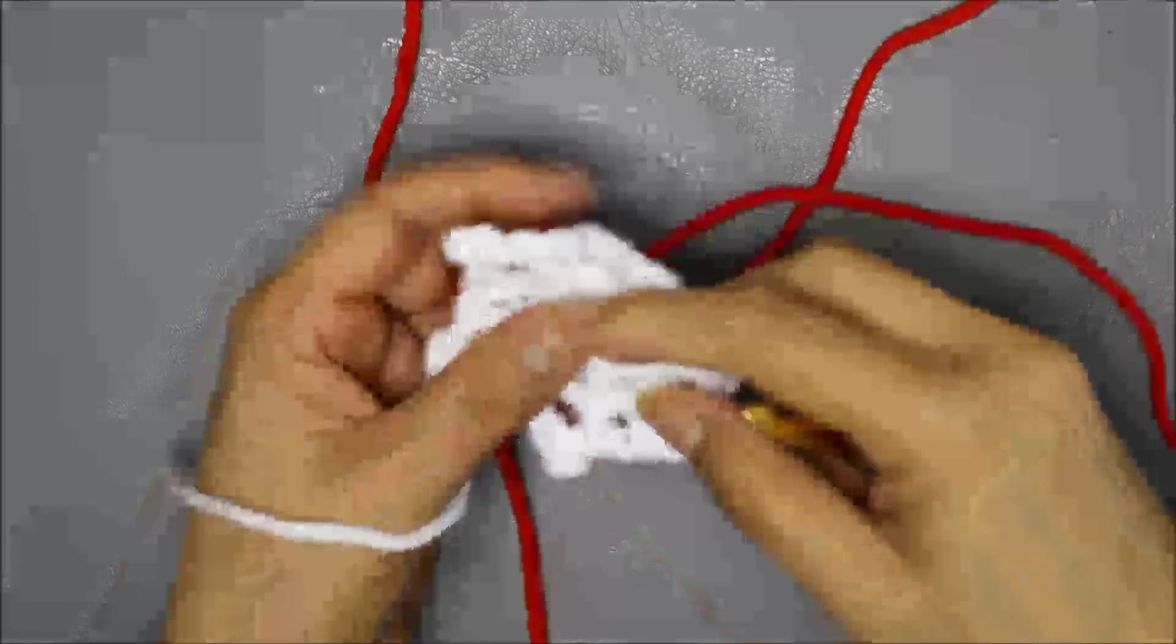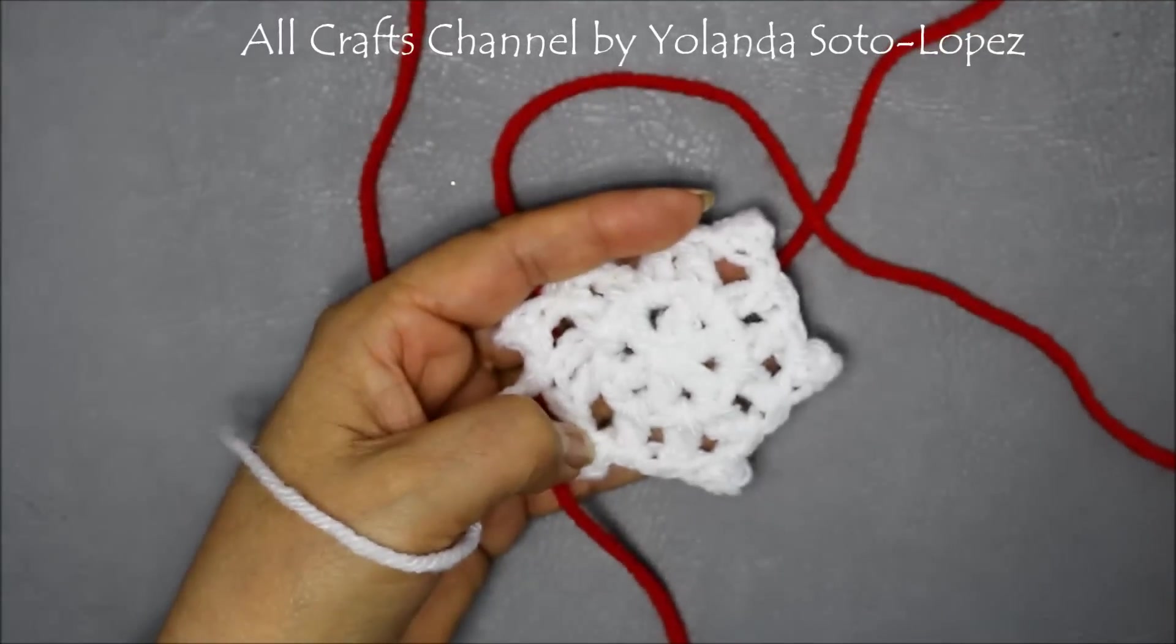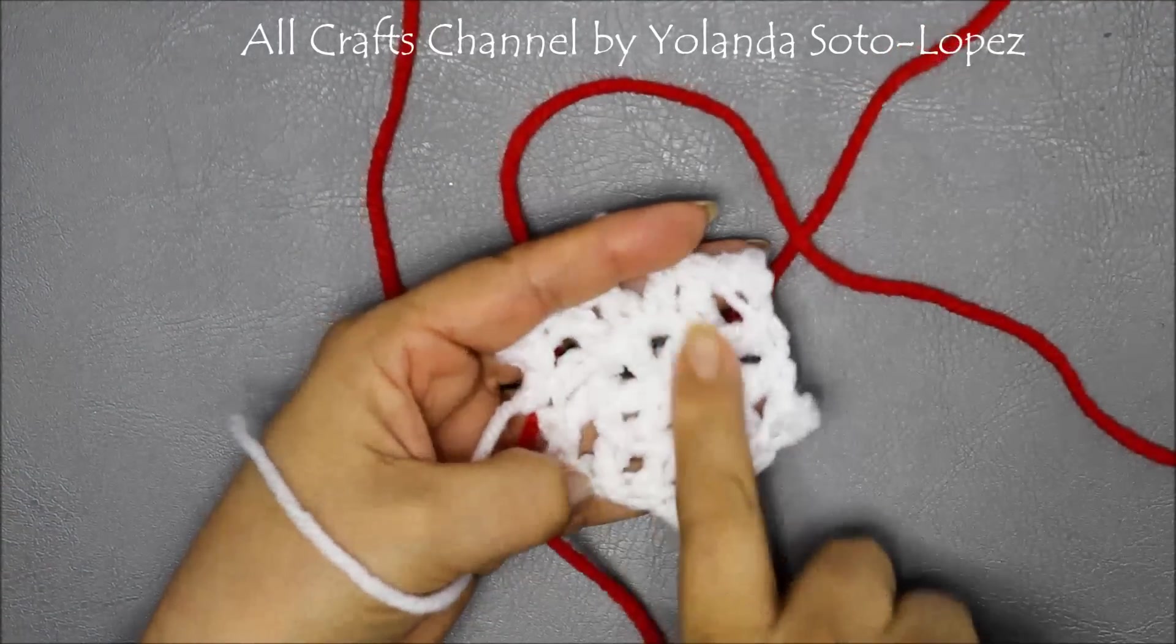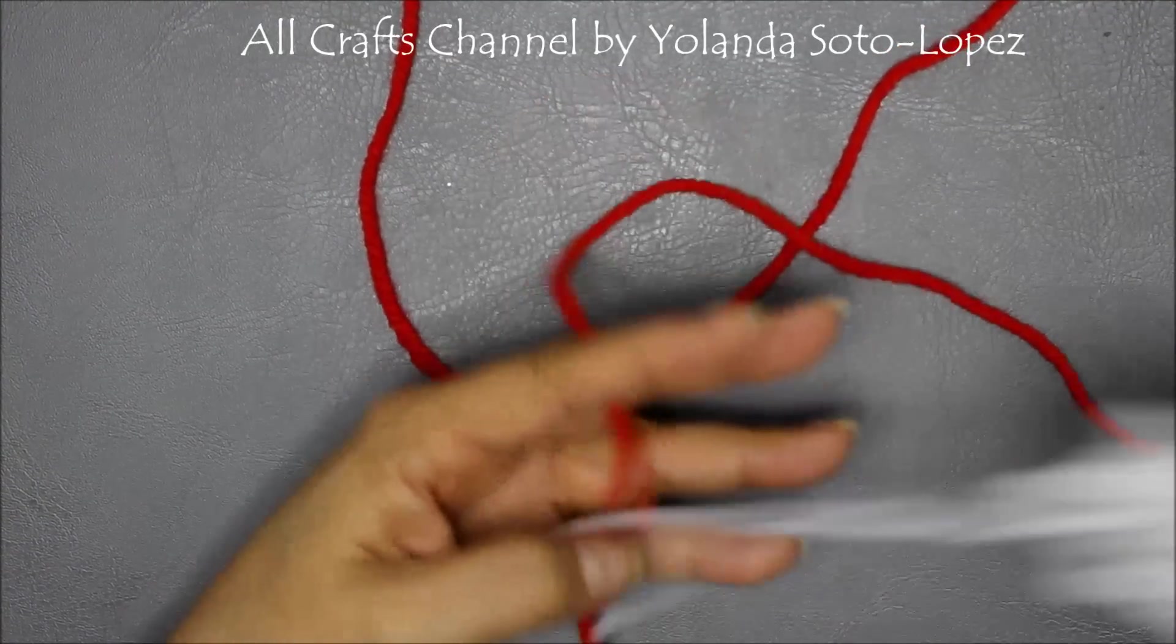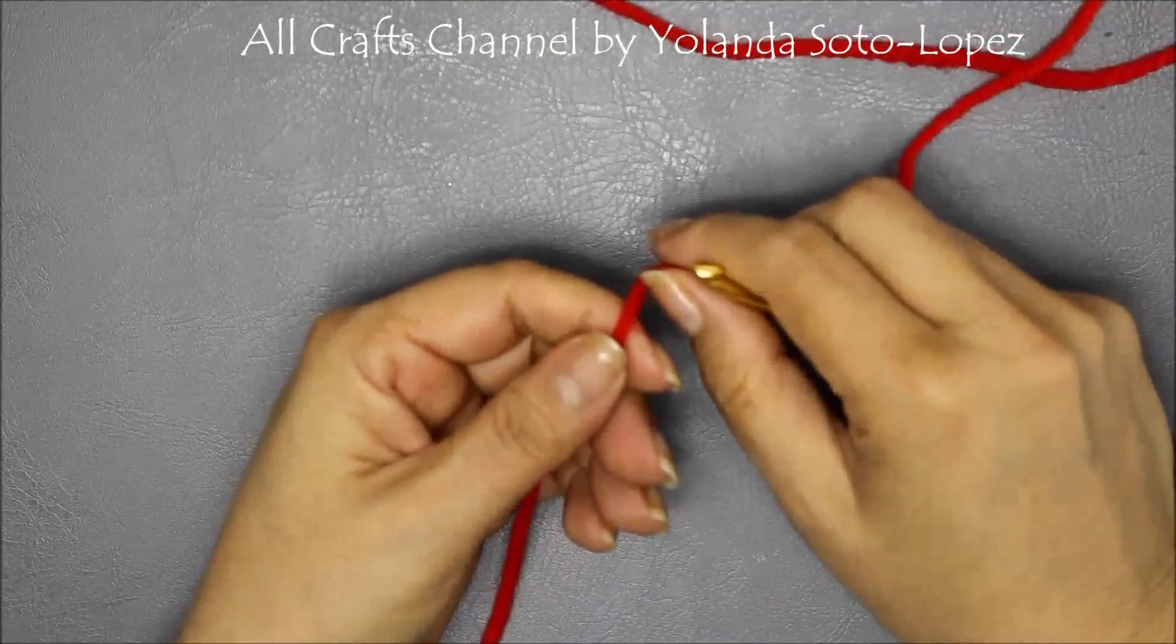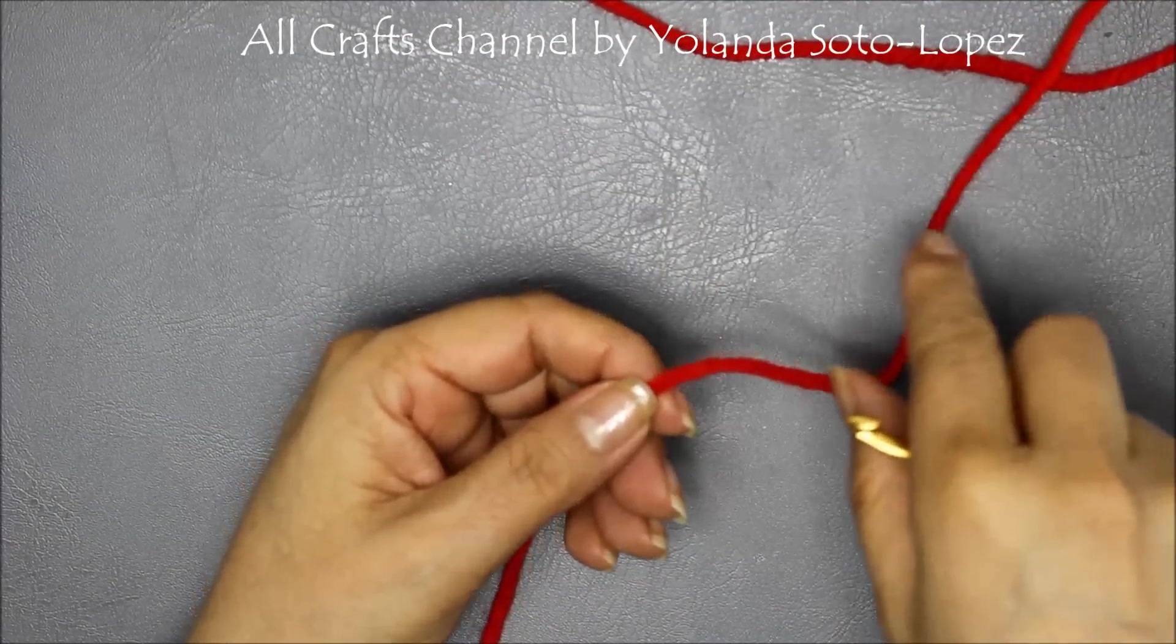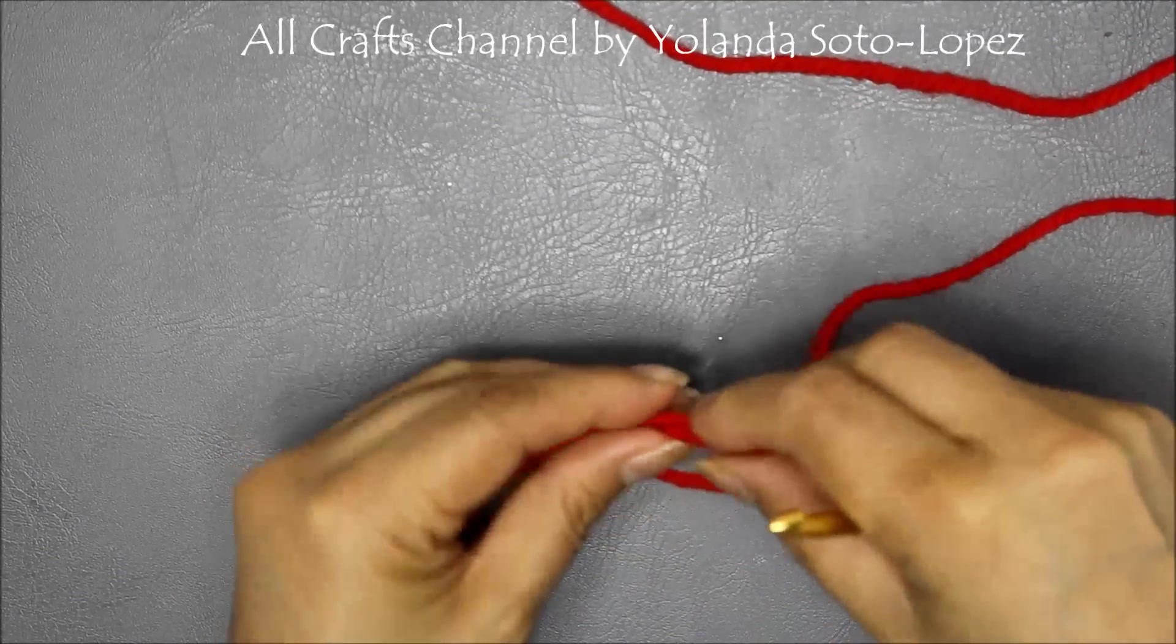When I actually worked on the snowflakes I did them in white but since they don't photograph well, I'm going to make the snowflake in red but you would be making yours in white. To begin, you can either chain four and slip stitch into the first chain or do the magic loop which is what I'm going to do here, the magic circle.